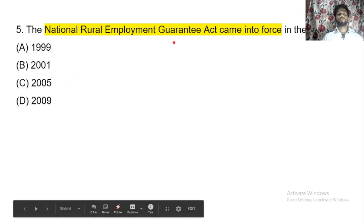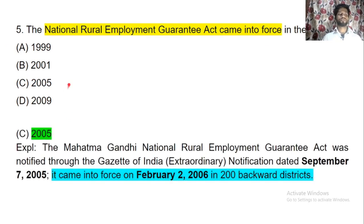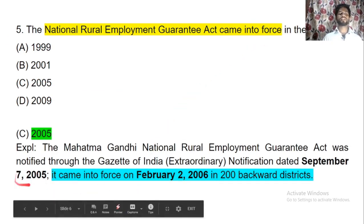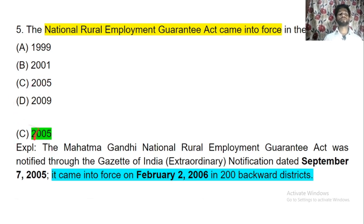Next question on when the National Rural Employment Guarantee Act came into force. It should be 2006, but there is no option for 2006. The Mahatma Gandhi National Rural Employment Guarantee Act was notified through the Gazette of India extraordinary notification in September 2005 and came into force on February 2, 2006 in 200 backward districts. The question or options are incorrect; otherwise it should be 2006.